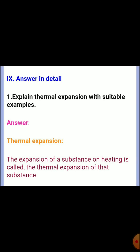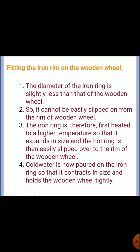Ninth section: Detailed answer. Explain thermal expansion with suitable examples. Answer: The expansion of a substance on heating is called thermal expansion. Example 1 — Fitting the iron rim on a wooden wheel: The diameter of the iron ring is slightly less than that of the wooden wheel, so it cannot be easily slipped over. The iron ring is heated to a higher temperature so it expands, and the hot ring is then slipped over the rim of the wooden wheel. Cold water is poured on the iron ring so that it contracts and holds the wooden wheel tightly.